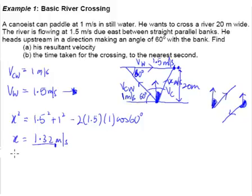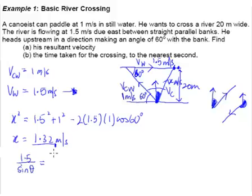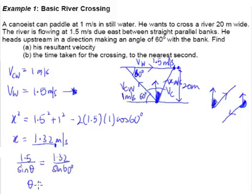Let's call this angle theta. By using the sine rule: 1.5 / sin(θ) = 1.32 / sin(60°). Cross-multiplying and applying inverse sine, from the calculator you get theta = 79.78 degrees.